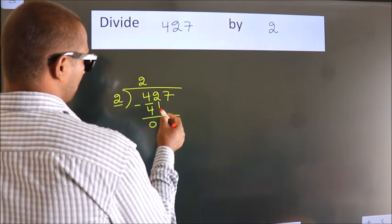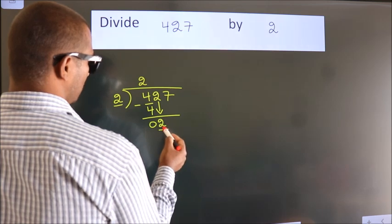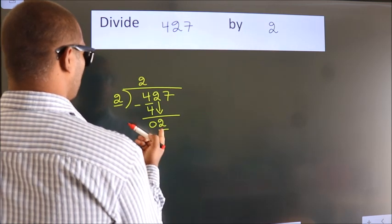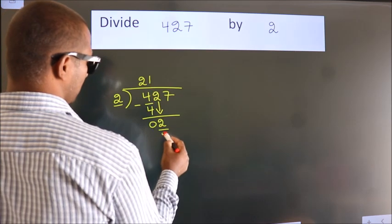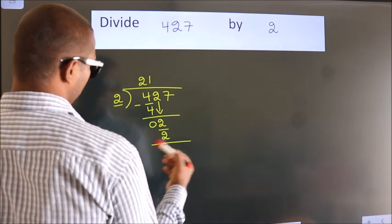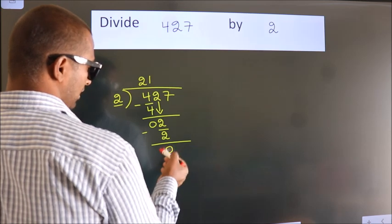After this, bring down the beside number. So, 2 down. When do we get 2? In 2 table, 2 1s, 2. Now, we subtract, we get 0.